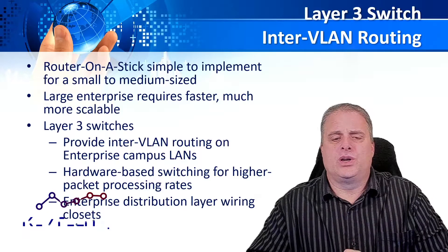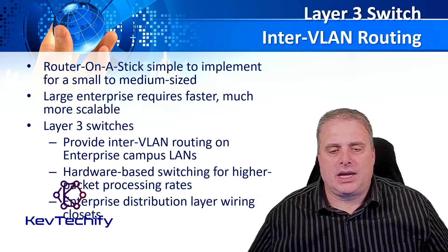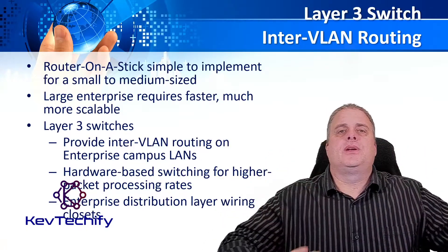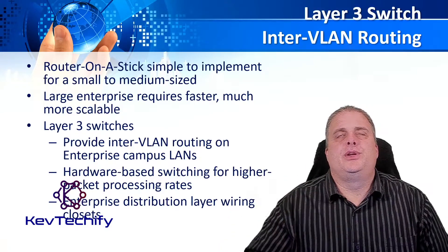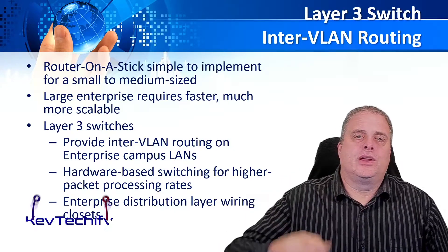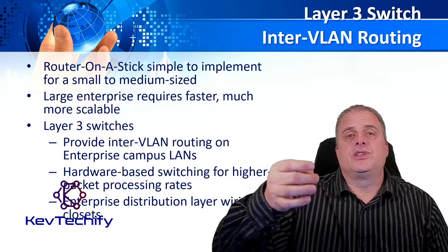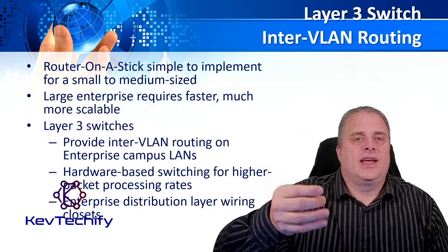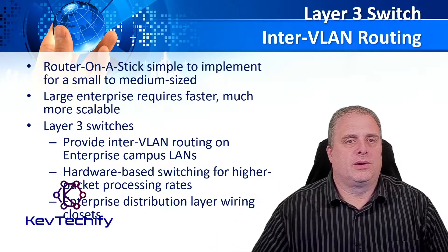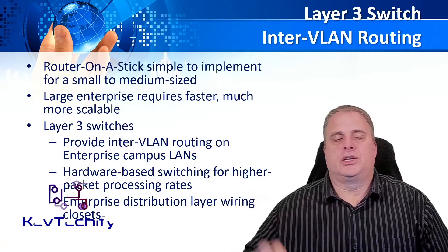It's hardware-based switching, so we can get a lot more packets through in a shorter amount of time. Layer 3 switches typically go into the distribution layer. Remember, we have three layers: the core layer, the distribution layer, and the access layer. Layer 3 switches live in that distribution layer, allowing you to move data fairly quickly from one main point to another — building to building, or location to location.